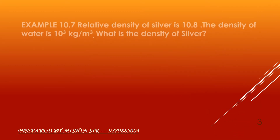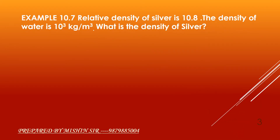Example 10.7: The relative density of silver is 10.8. The density of water is 10³ kg per meter cube. What is the density of silver?